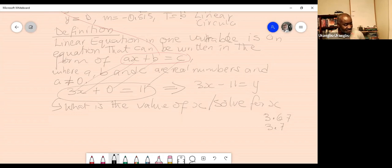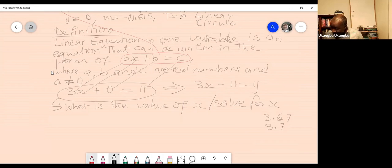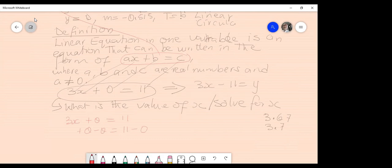So explain how you got the three point seven. First name and then explain, please. Minus zero for both sides. Okay. I'm going to write exactly what you say. So you have 3X plus 0 equal to 11. And then she said zero minus zero equal to 11 minus zero. Is that what you said? Yeah.